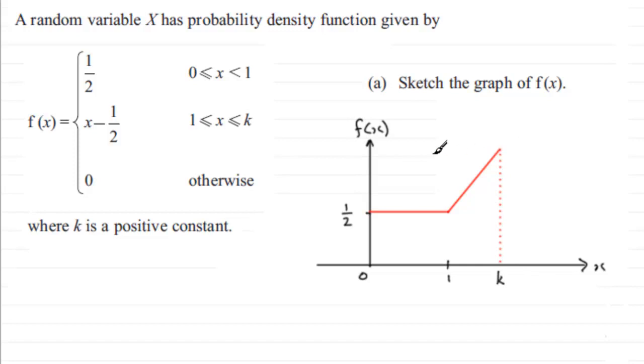That gives us this value here as being k. And across the top here, this value, when x is equal to k, if I substitute it in here, this will be k minus 1/2. So this top value here is k minus 1/2.